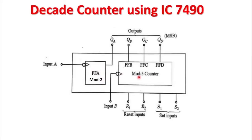In the same fashion, the mod 5 section can also act as one independent mod 5 counter, and its output is generated on flip-flop B, flip-flop C, and flip-flop D — that is QB, QC, and QD pins. When I want to use it as a mod 10 counter, I have to use them in combination, meaning mod 2 as well as mod 5 are used at one time. To do this, I connect the output of the first flip-flop, QA, to the input of the mod 5 counter — that is, QA pin is connected to input B.